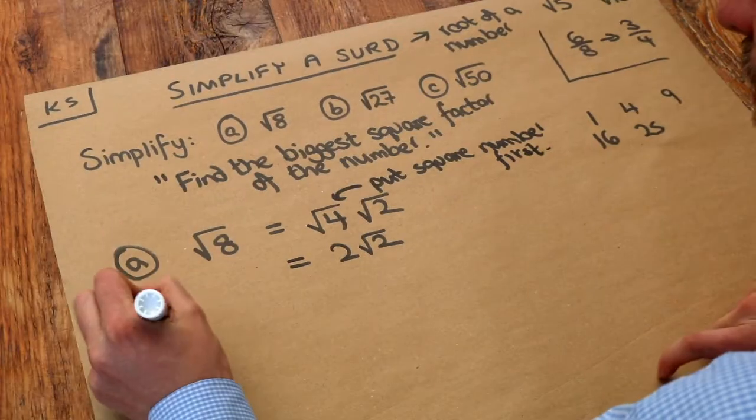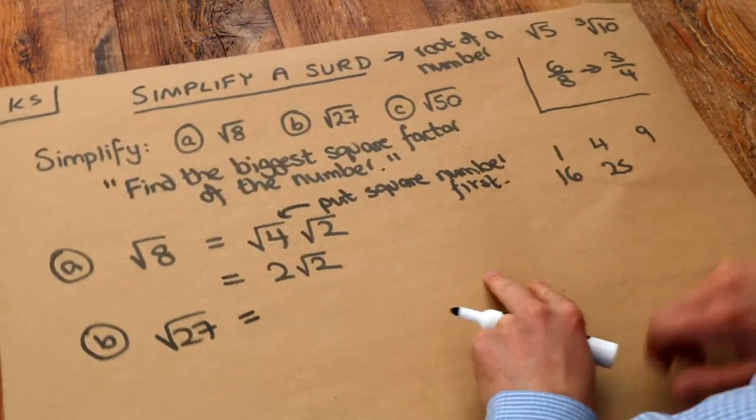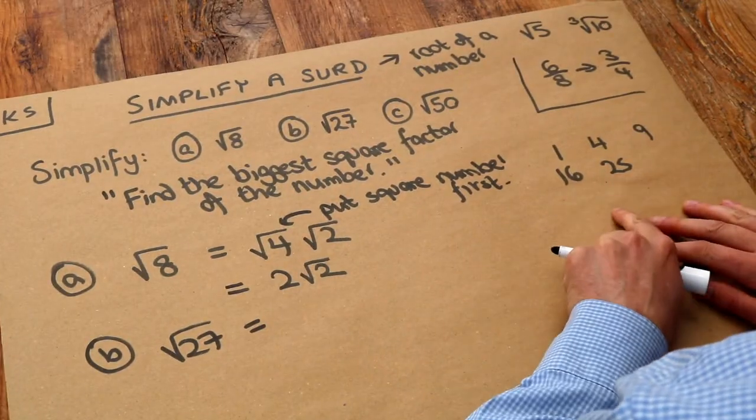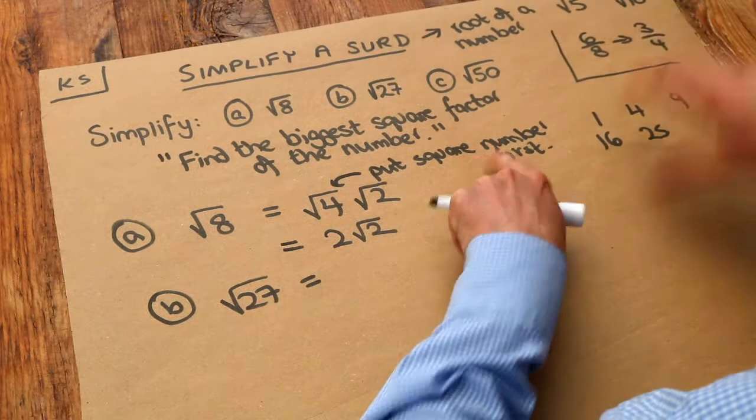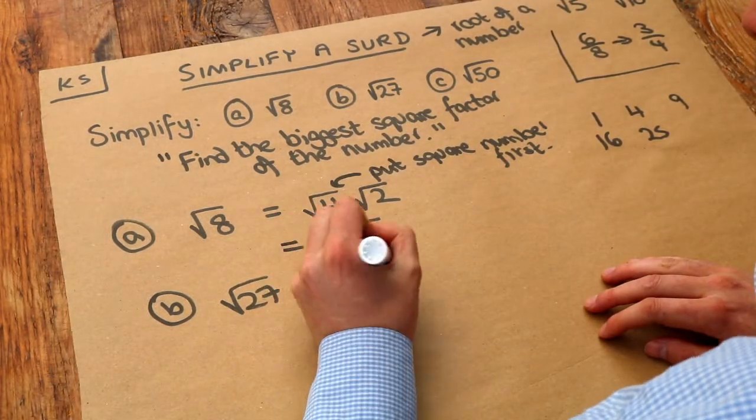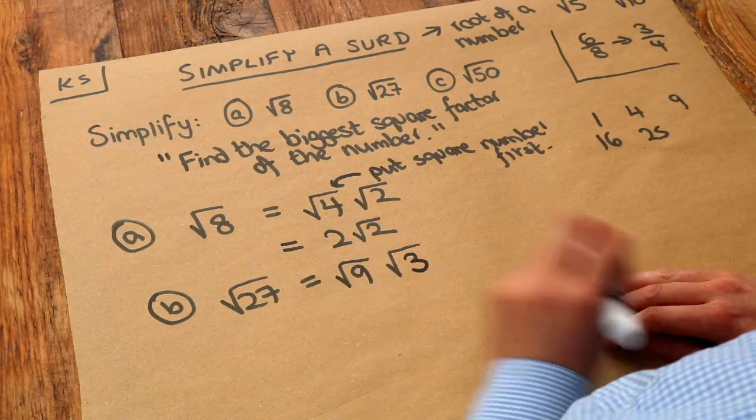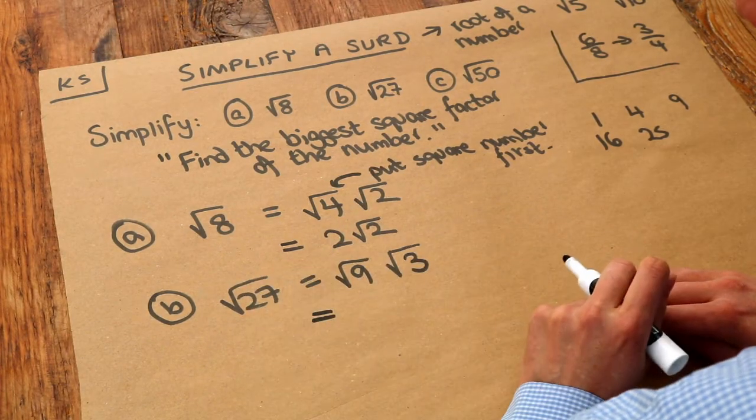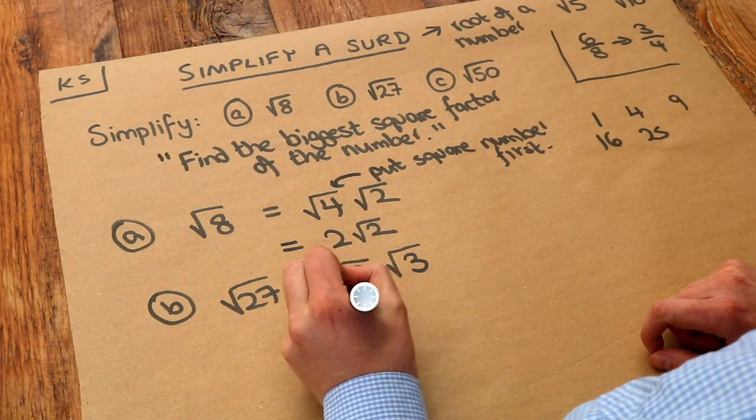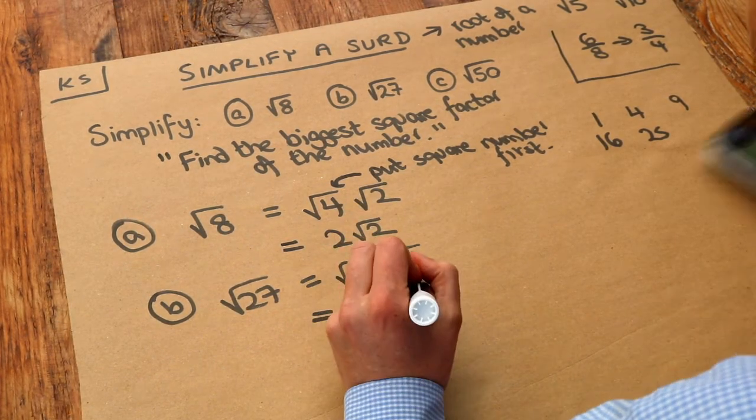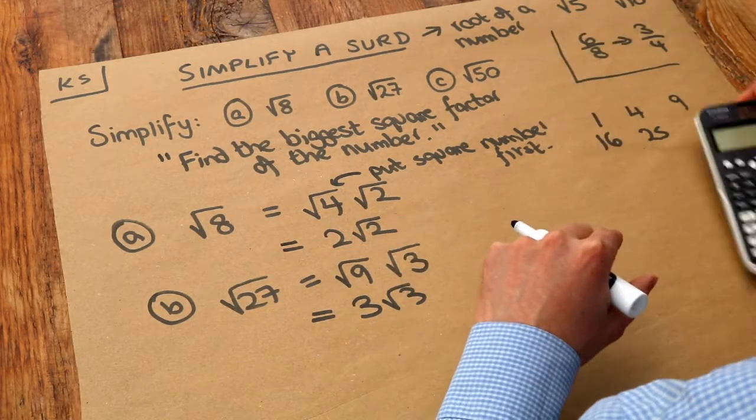The square root of 27. What's the biggest square factor of 27? Well it's 9, isn't it? We can see the 9 over here. We put the square number first - we write root 9 and then think, 9 times what is 27? It's 3, so we put the 3 there. Then we just simplify. What is the square root of 9? It's 3, isn't it? So we have 3 root 3. You can check this on your calculator. If I write root 27, it simplifies it to 3 root 3 for me.